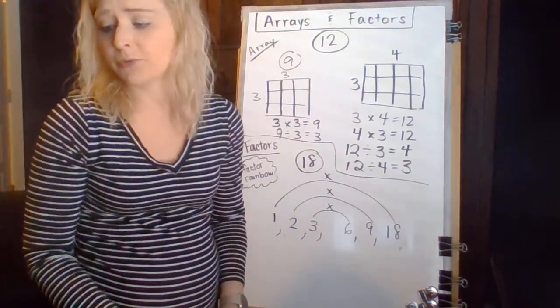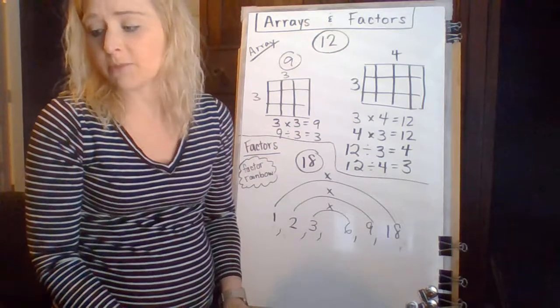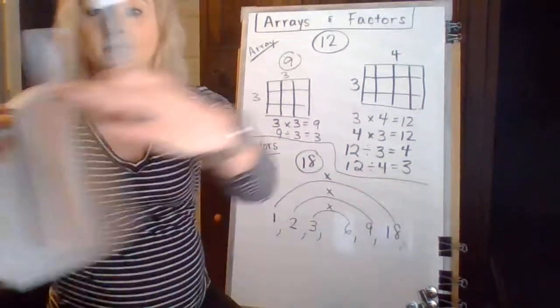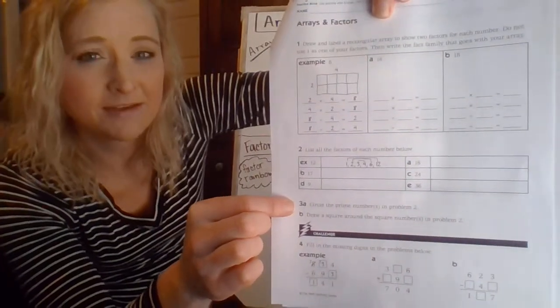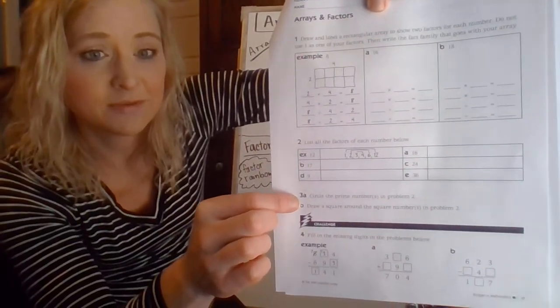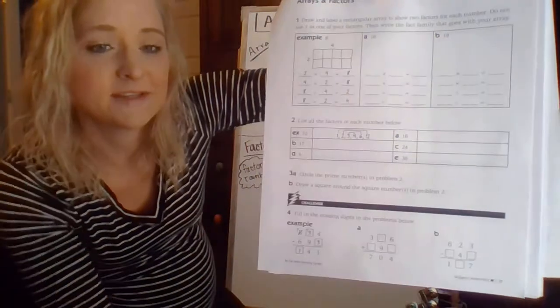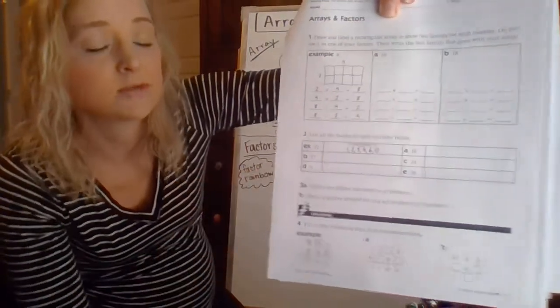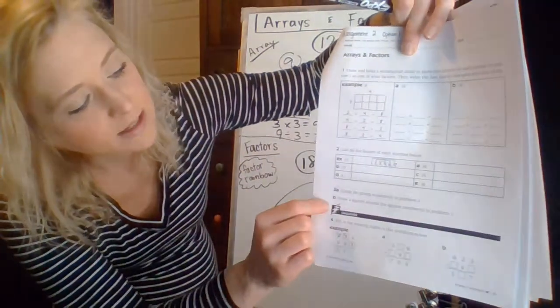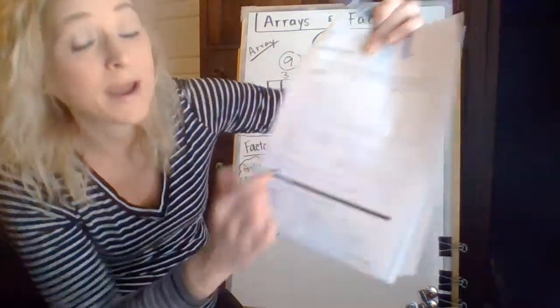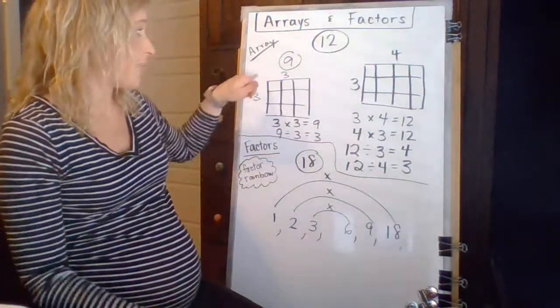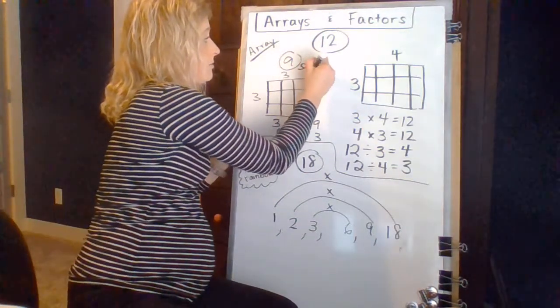Now, in part three, you're asked to circle the prime numbers in problem two. Don't forget to do that. Sometimes we skip over things in class because we just skip over it. But don't skip over it because that's really important. And then part B says draw a square around the square numbers. And we just talked about square numbers up here.